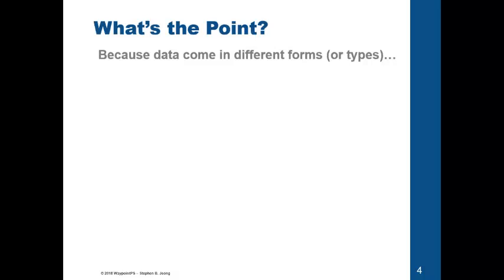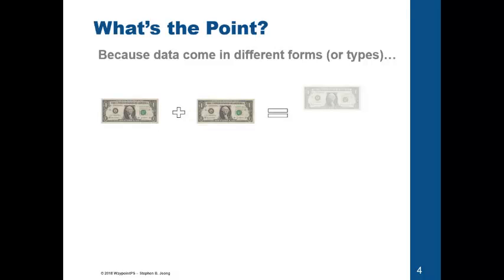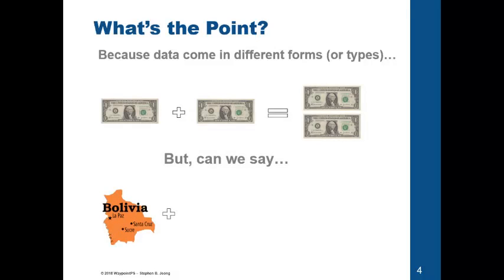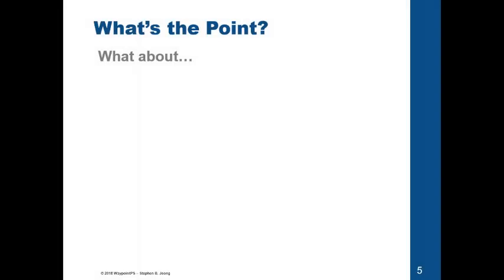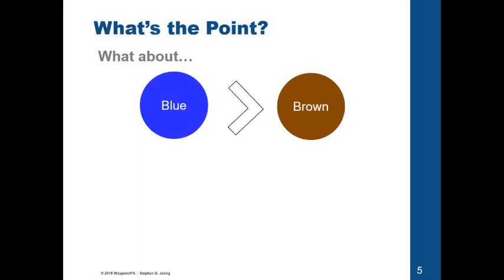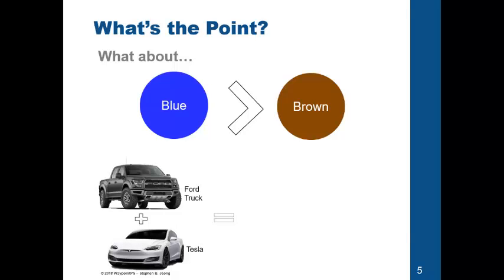Because data come in different forms or types. Think about this. Dollar plus dollar equals two dollars. We know that. But can we take countries and say that Bolivia plus Ecuador equals Colombia? Not really, unless we're talking about geographic regions or GDP or something like that. What about colors? Can we say that blue is greater than brown? We cannot. You may prefer blue over brown, but we really can't say that blue, when we talk about quantitatively, is greater than brown.